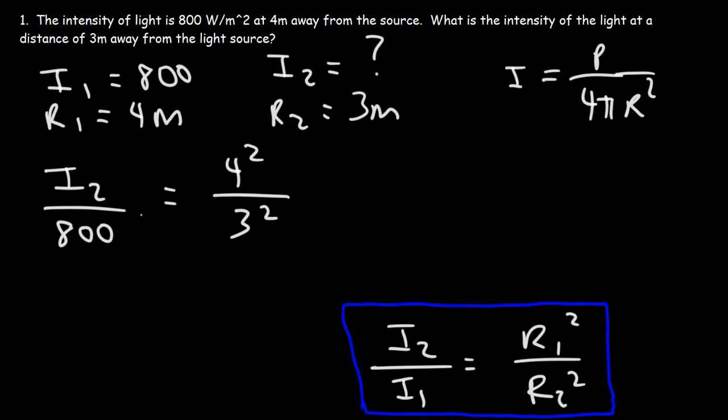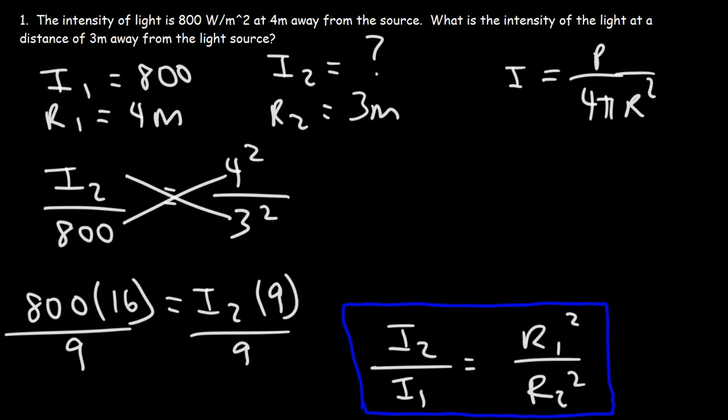So let's cross multiply. This is going to be 800 times 4 squared. 4 squared being 16. Equals I₂ times 3 squared. And 3 squared is 9. So the last thing we need to do is divide both sides by 9.